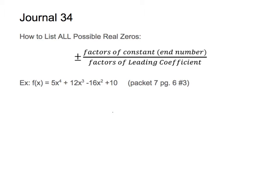Okay, so today we're going to be on Journal 34 and there's no bell work. We're going to go straight into the lesson. We've been talking about how to find x-intercepts, in other words, how to find all those zeros or what we call solutions for x.